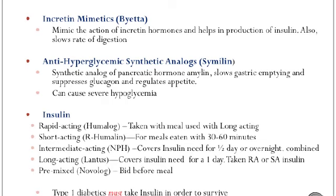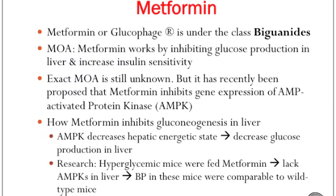Other classes of drugs used for treating diabetes include incretin mimetics such as Byetta, whose mechanism of action is to mimic the action of insulin-secreted incretin hormones, help in production of insulin, and also slow down the rate of digestion. Anti-hyperglycemic synthetic analogues such as Symlin are synthetic analogs of the pancreatic hormone amylin, which slows down gastric emptying, suppresses glucagon, and regulates appetite, but can cause severe hypoglycemia. Insulins used for type 1 diabetes include rapid-acting Humalog, short-acting Humulin R, intermediate-acting NPH, long-acting Lantus, and premixed NovoLog.